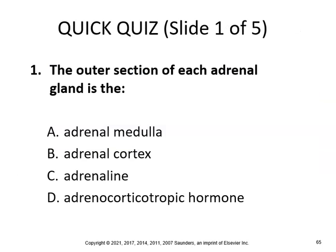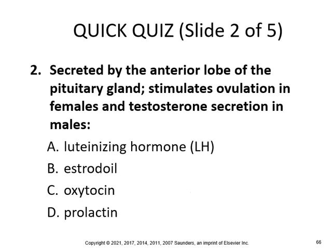Quick quiz: The outer section of the adrenal gland is called the adrenal cortex. Secreted by the anterior lobe of the pituitary gland, it stimulates ovulation in females and testosterone secretion in males — that would be a luteinizing hormone.